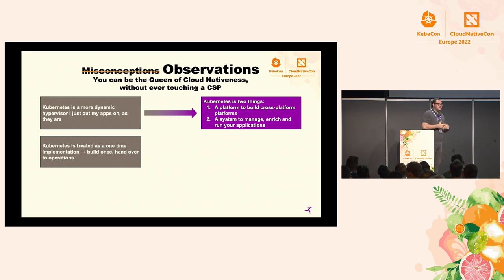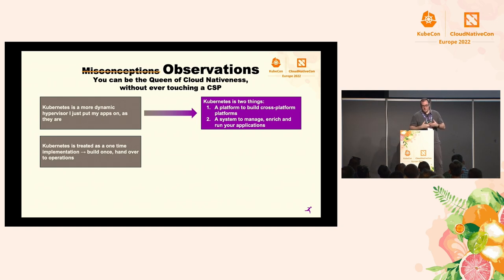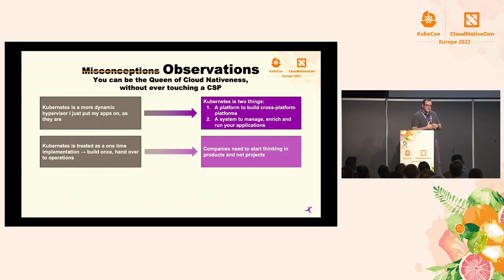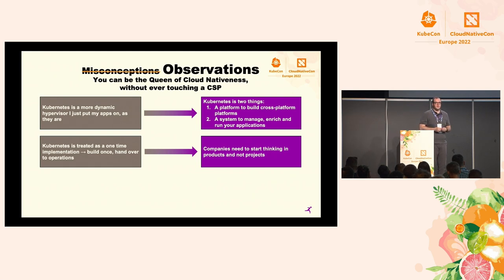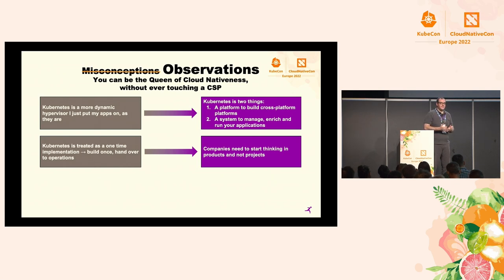Another observation: Kubernetes is often treated as a one-time implementation. Seriously, we have customers who have re-implemented the same kind of platform in different shapes on different cloud providers. But where you should really think about it: if you build a Kubernetes platform, you need a continuously available product team for it — someone listening to the end users and development teams, someone listening to what's needed in the future, and someone who is part of the community. The cloud-native community is moving so fast you need a whole team just to keep track of it.